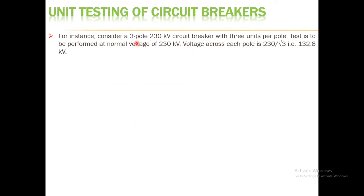Let us take an example: suppose a three-phase 230 kV circuit breaker with three identical units per pole is available for unit testing. The test is to be performed at a nominal voltage of 230 kV. The voltage across each pole is 230 divided by root 3, which is the per-phase voltage, equal to 132.8 kV. This is the information available to us.